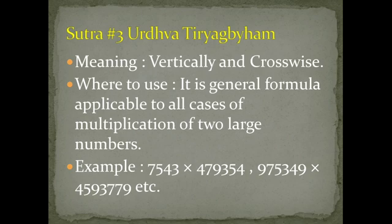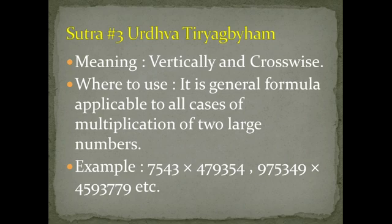Sutra 3 is Urdhva Tiryakbhyam, meaning 'vertically and crosswise.' This is a general formula applicable to all cases of multiplication of two large numbers. You can multiply a 3-digit number with a 4-digit number, or a 4-digit number with a 5-digit number — there is no condition that it must be near to a base like 1000 or 100. You can use this Sutra anywhere, and we are going to explain it in detail in our next videos.